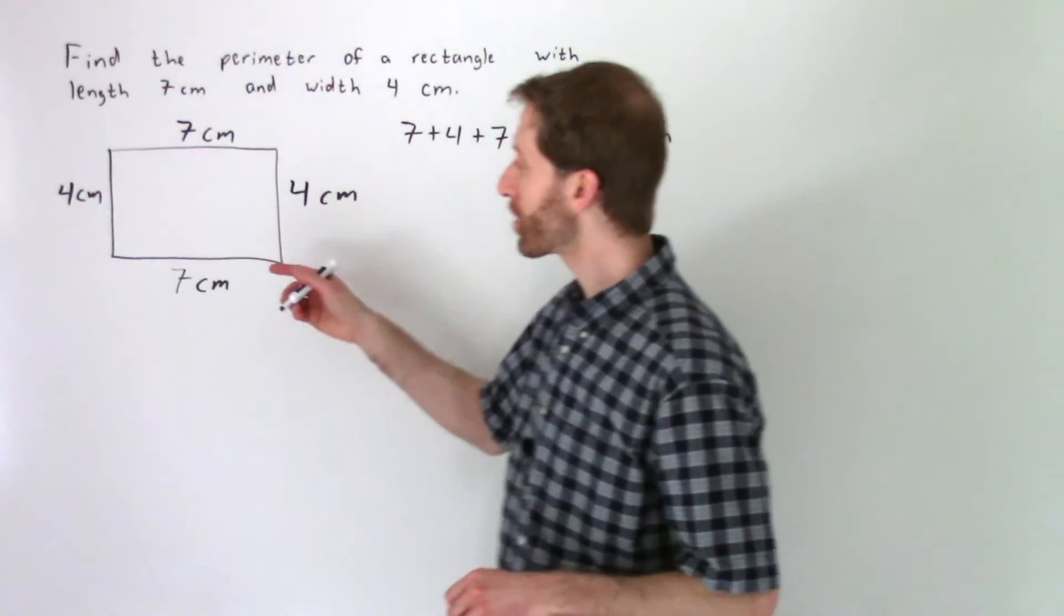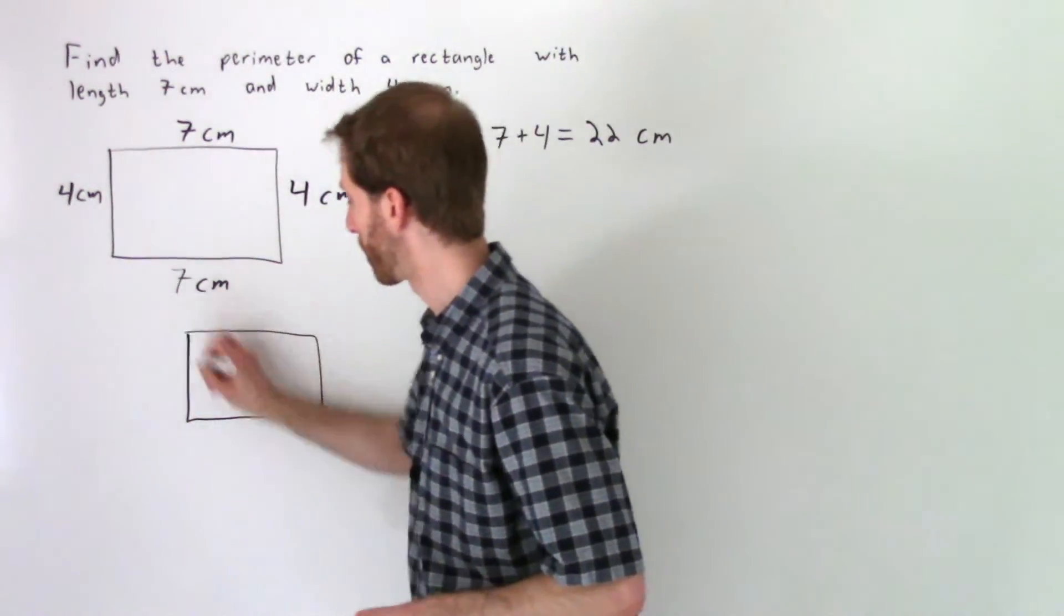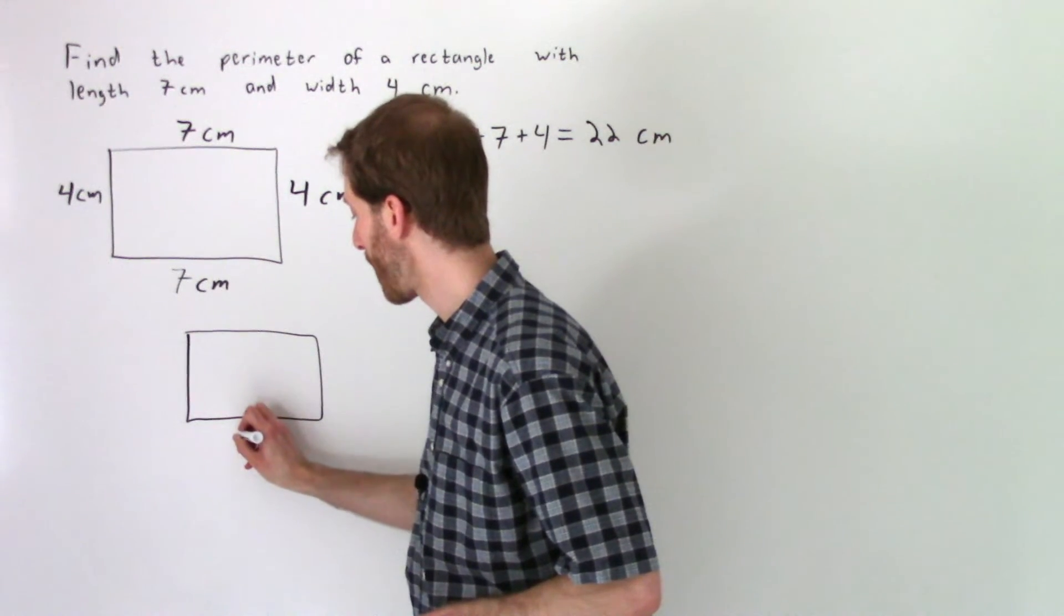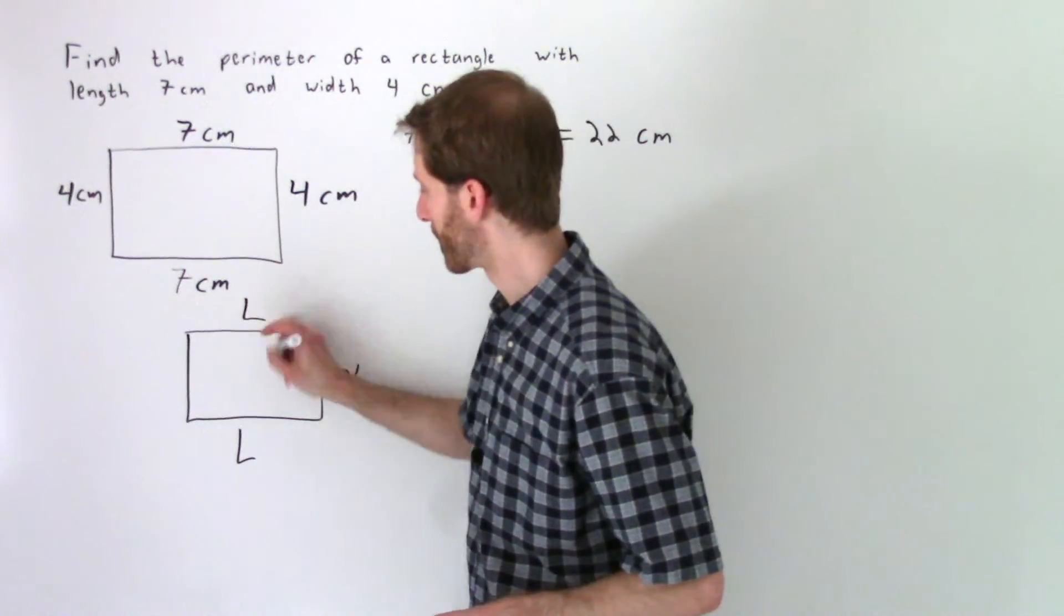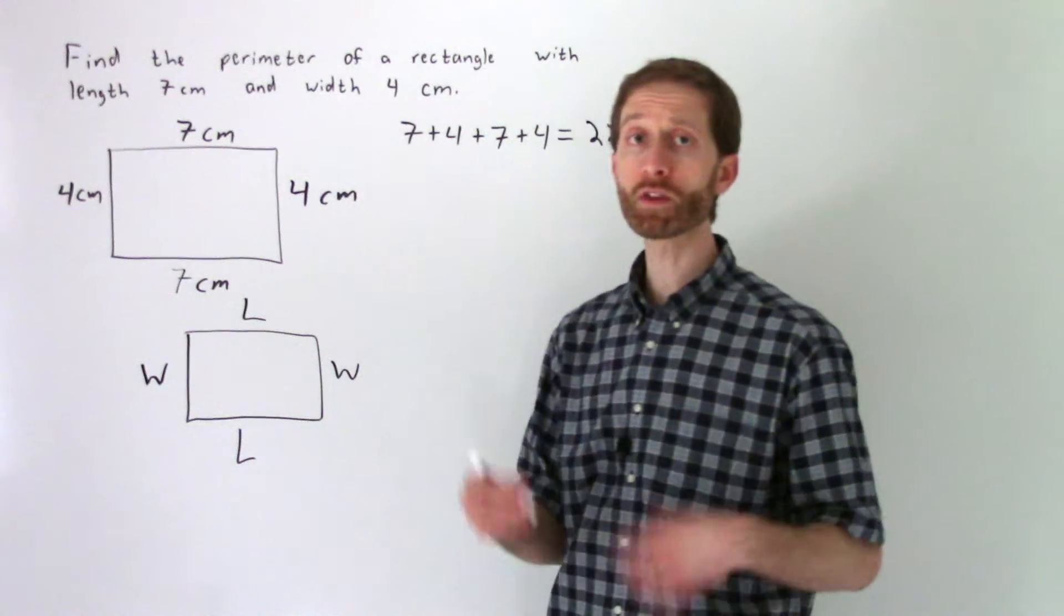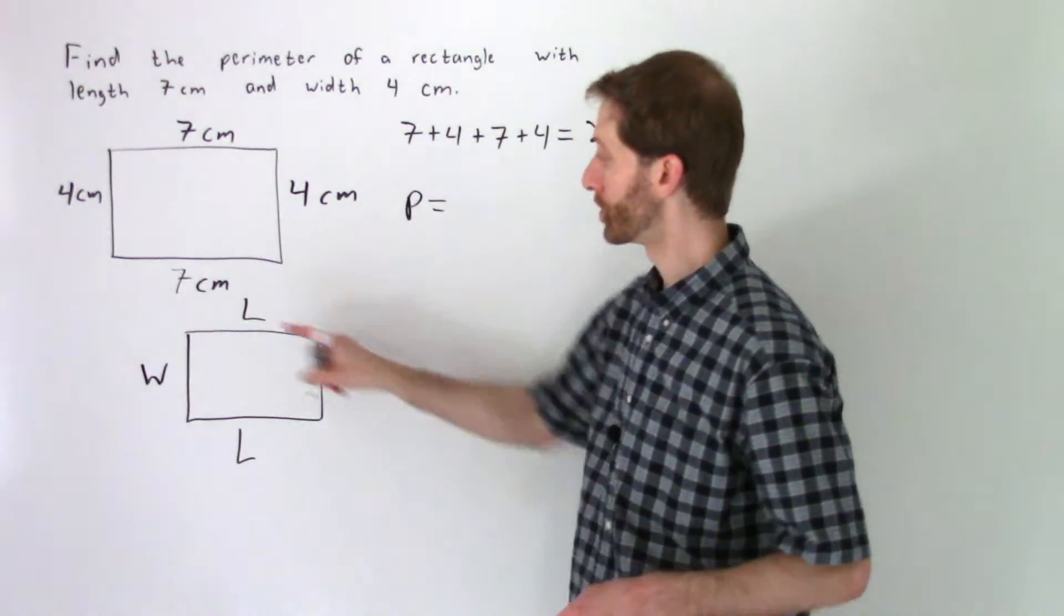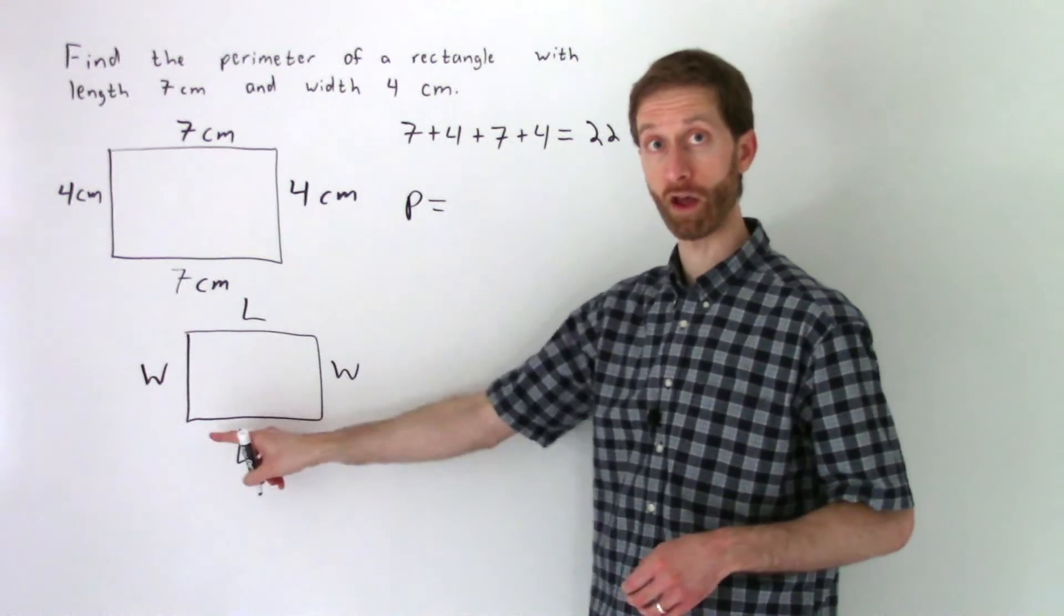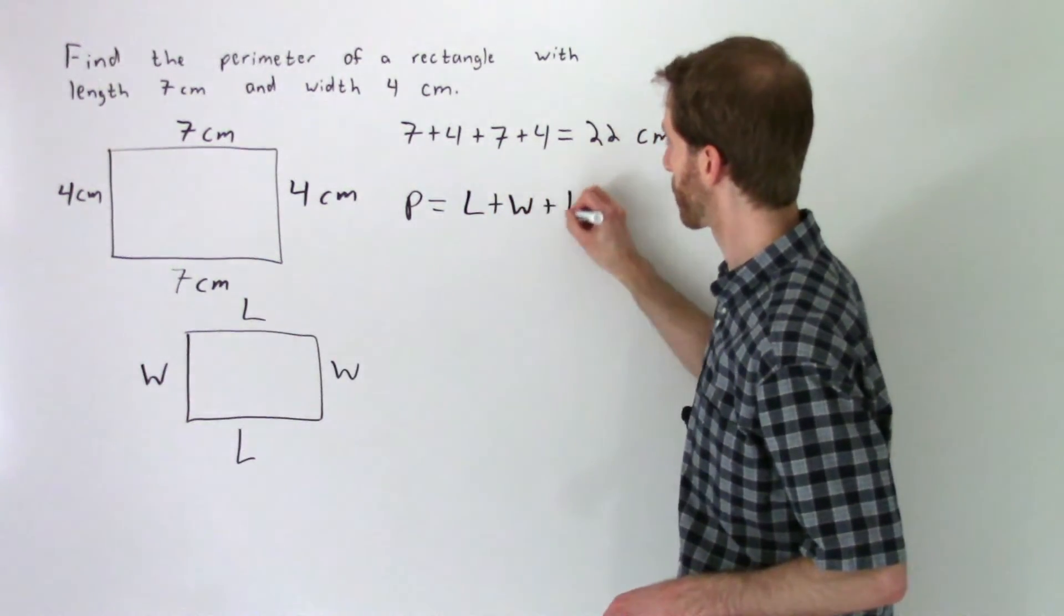So let's say that we've got any length of any rectangle. So I'll draw a rectangle right here. So we'll call that length L, capital L. And then this width would be W, this would be the same length L right there, and this would be the same width right here. So if we want the perimeter of that rectangle, well then the perimeter would be equal to L plus W plus L plus W.